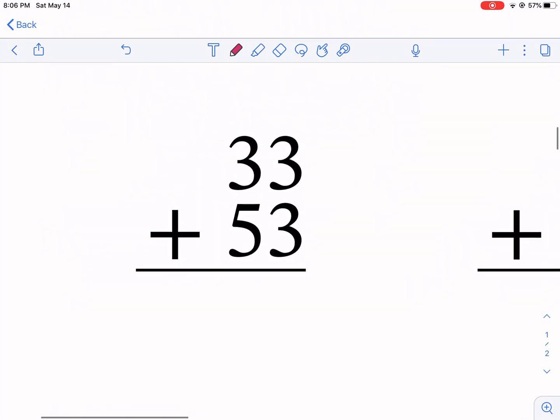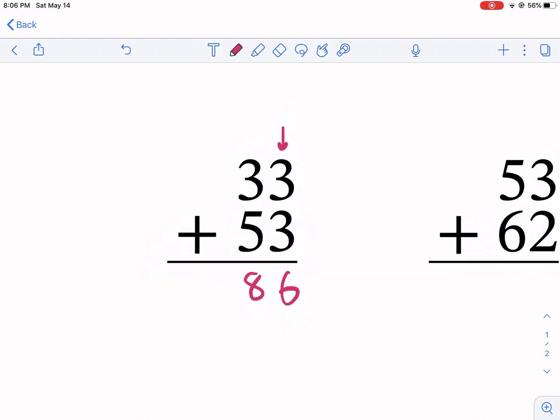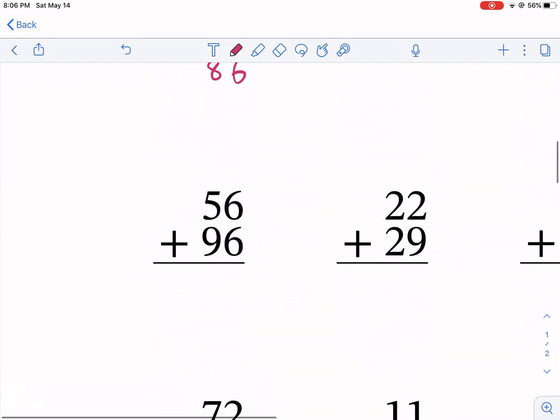I'm going to switch over to pink. We're going to start with the ones place. We get six. We have five plus three. That is eight, so we have 86 as our answer.